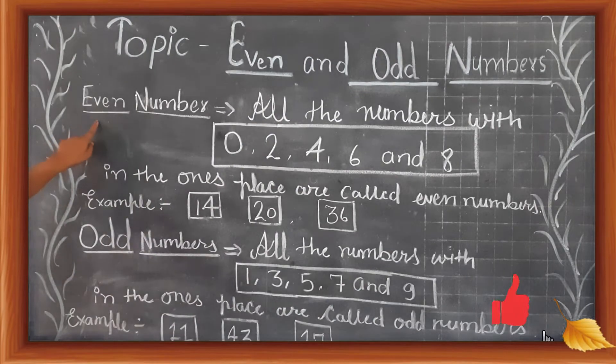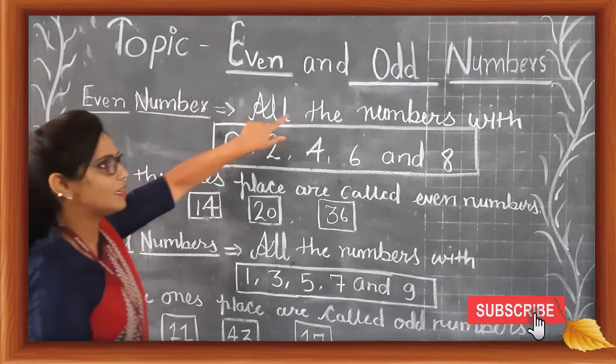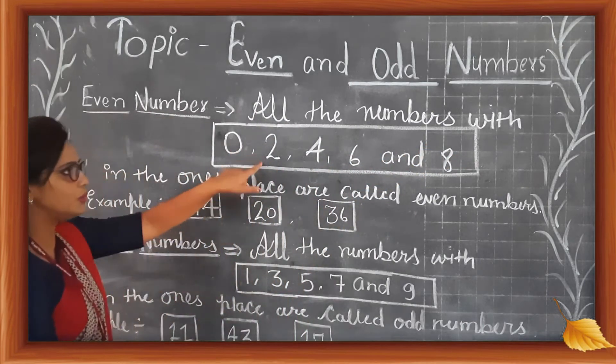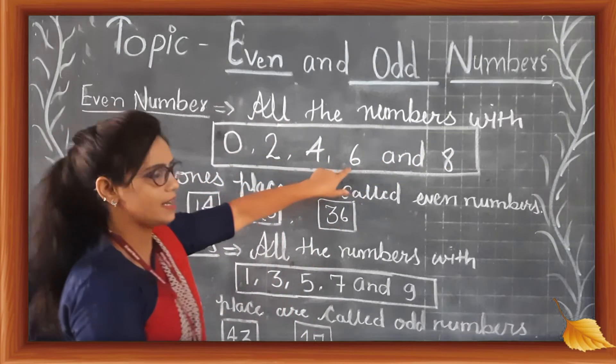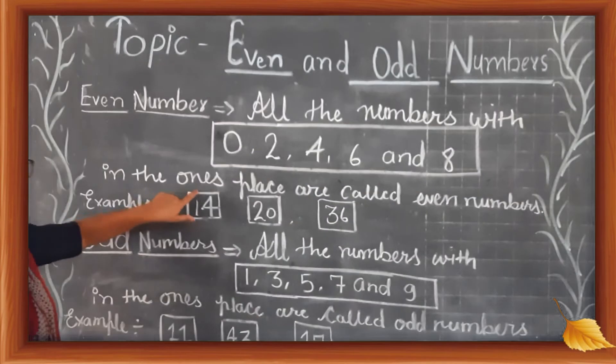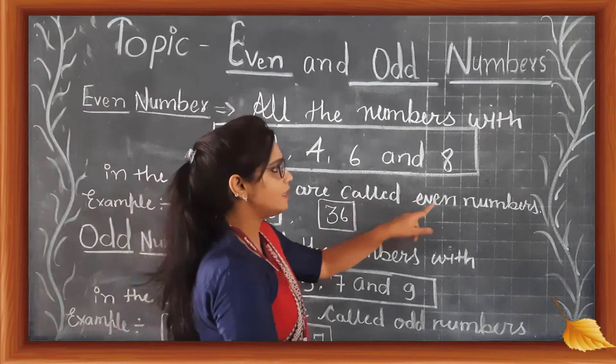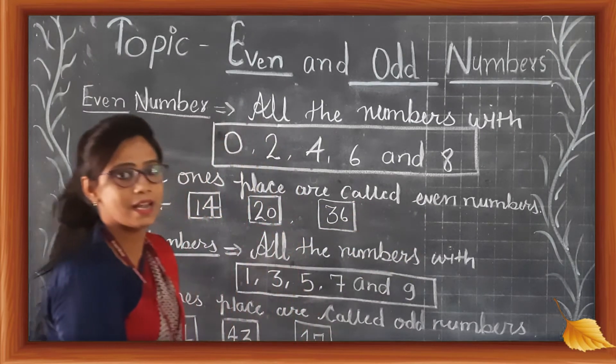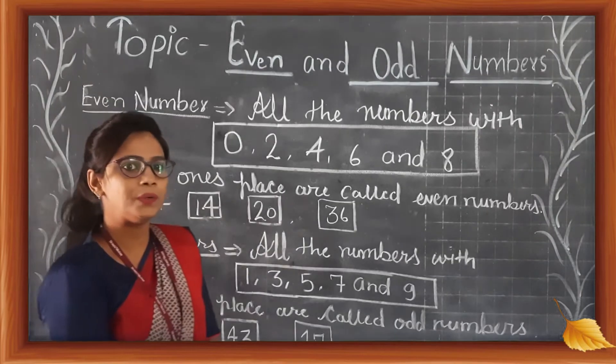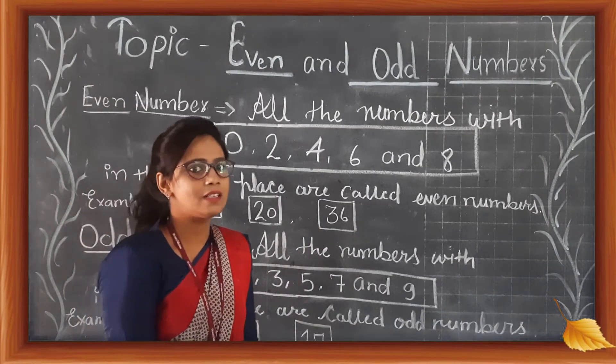What is an even number? Even numbers are the numbers with 0, 2, 4, 6, and 8 in the ones place. These are called even numbers. We can say the numbers which are divisible by 2 are called even numbers.